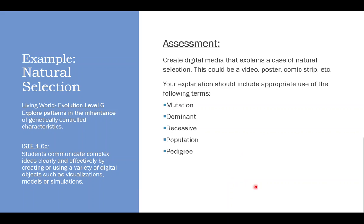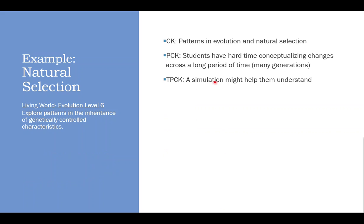If I was doing this fully, I would also create a rubric that would evaluate based on their creation whether they've met these learning outcomes. So you can see here I have content knowledge, which is patterns and evolution in natural selection. Pedagogical content knowledge: students have a hard time conceptualizing changes across a long period of time, many generations. So that's one of the challenges we have with natural selection. It's just understanding the scope of something across a long period of time with a lot of randomness and variations. And my TPAC says, hmm, I might use a simulation to help them understand that.